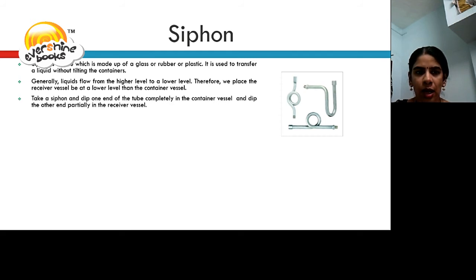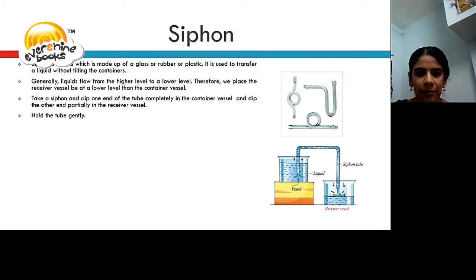Take a siphon and dip the one end of the tube completely in the container vessel and dip the other end partially in the receiver vessel. Hold the tube gently. In the figure, the container vessel has been kept at the high position while the receiver vessel has been kept below in a lower position. Siphon tube is connected between the container vessel and the receiver vessel.